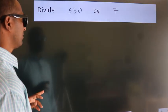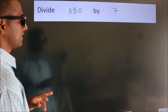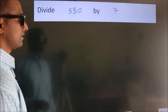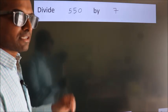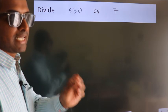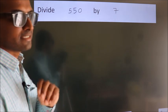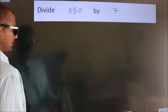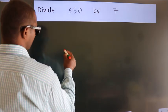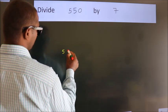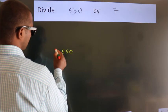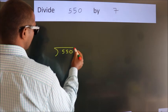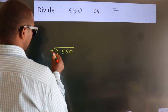Divide 550 by 7. To do this division, we should frame it in this way: 550 here, 7 here.